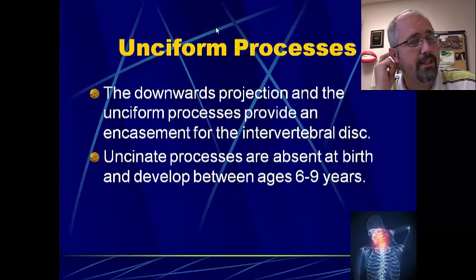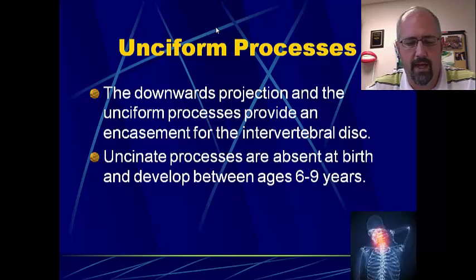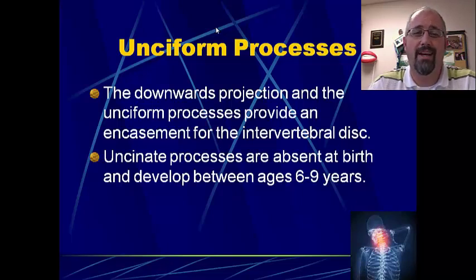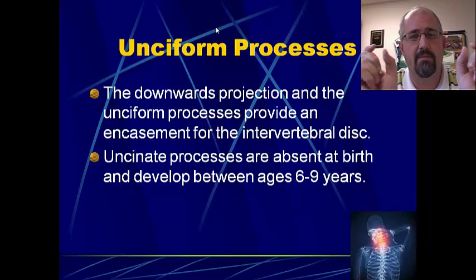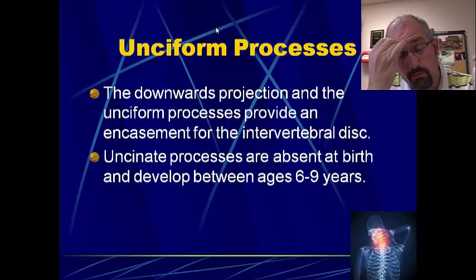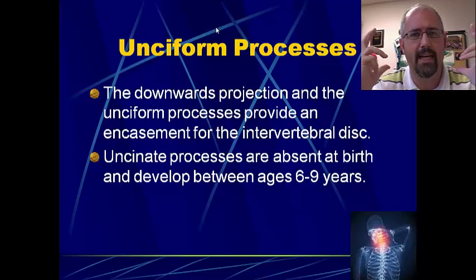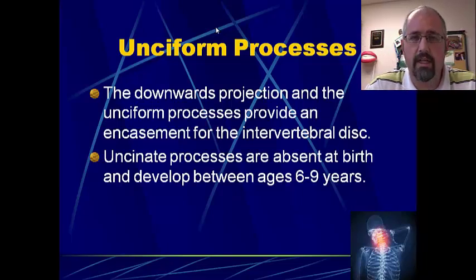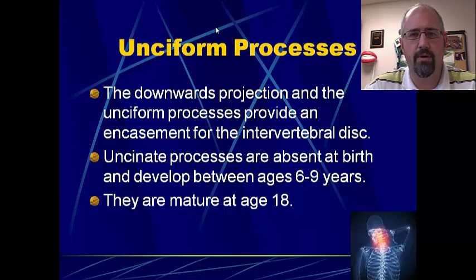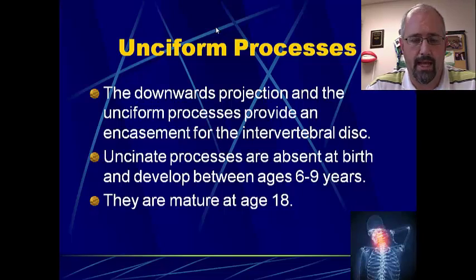These unciform processes are not actually present at birth. If you think about little babies, their heads have no stability, no strength, and they also don't have these unciform processes there to provide that additional stability. Roughly between six and nine years of age they begin to grow, and as these unciform processes begin to grow, the head and the neck becomes a lot more stable. Little kids don't have that strength or that stability. The unciform processes actually mature by the age of 18.